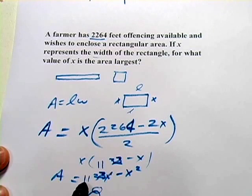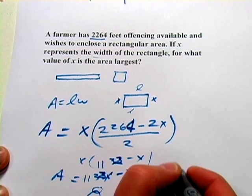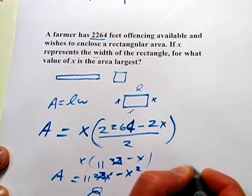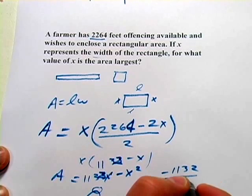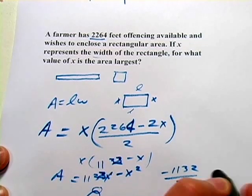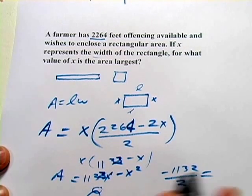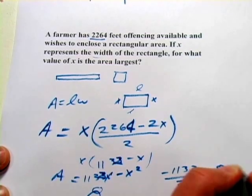Let's find the vertex. We've got 1132 is our b, because that's the x term. So negative 1132 over 2a, and that's negative 2. When we do the division on that, we find we get 566 feet.